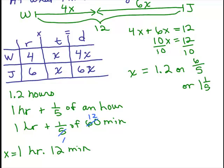So really, X could be thought of that. It's the same thing as writing 1.2, same thing as writing 6 fifths. But writing it in this way will help us to know exactly what time they meet.